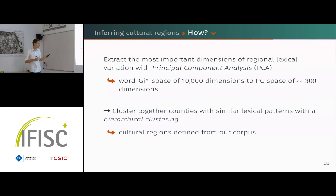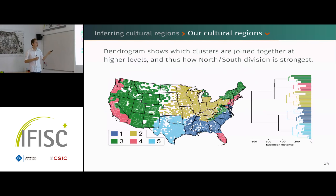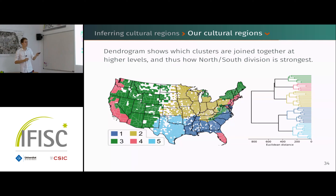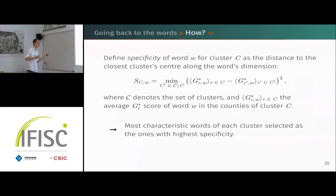This leads us to our cultural regions. The map on the left shows our cultural division of the US with five regions, and on the right is a dendrogram showing which counties are grouped together at each clustering step. We have five regions; looking at the map and dendrogram, there is a very strong division between the two blue regions and the rest of the country — basically the north versus south division is the strongest one.